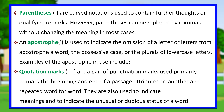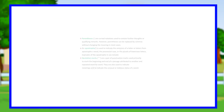An apostrophe is used to indicate the omission of a letter or letters from a word, the possessive case, or the plurals of lowercase letters. Quotation marks are a pair of punctuation marks used primarily to mark the beginning and end of a passage attributed to another and repeated word for word. They are also used to indicate meanings and to indicate the unusual or dubious status of a word.